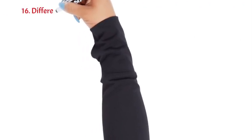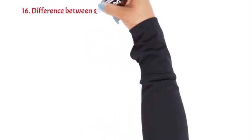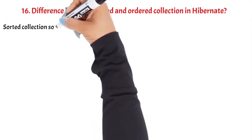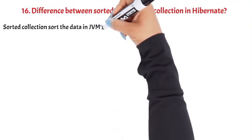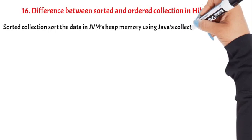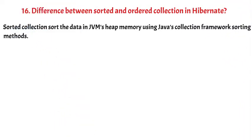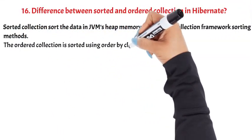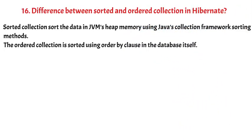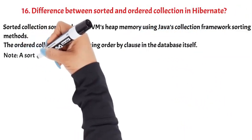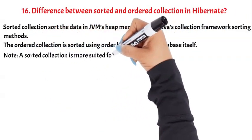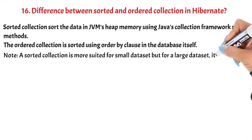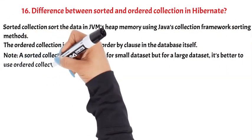Question 16: Difference between sorted and ordered collection in Hibernate. Sorted collections sort the data in JVM's heap memory using Java's collection framework sorting methods. The ordered collection is sorted using the ORDER BY clause in the database itself. Note: A sorted collection is more suited for a small dataset, but for a large dataset it's better to use an ordered collection.